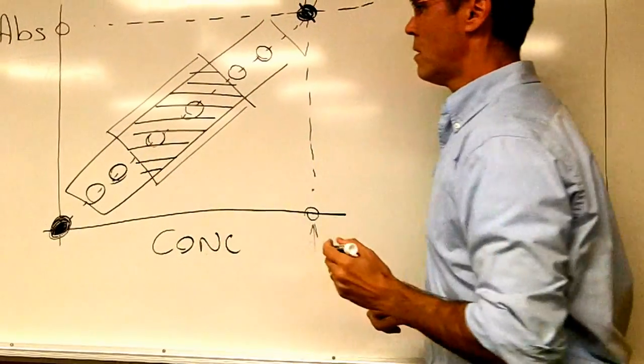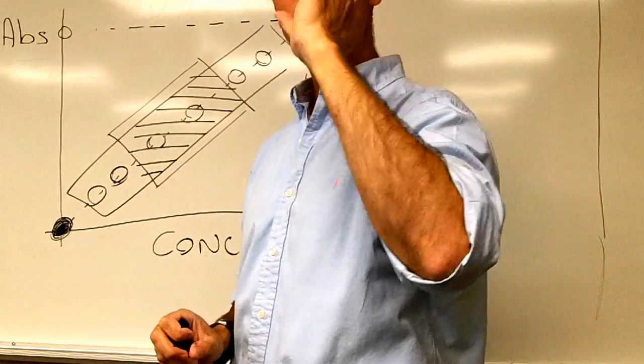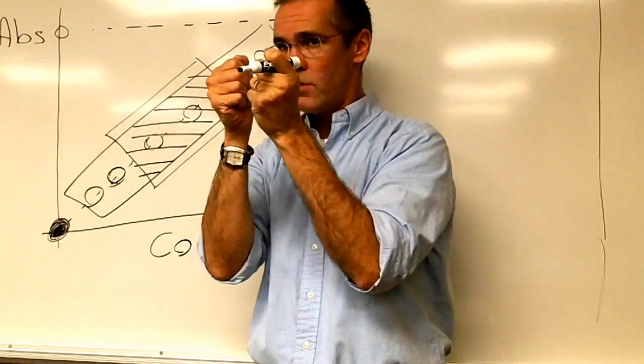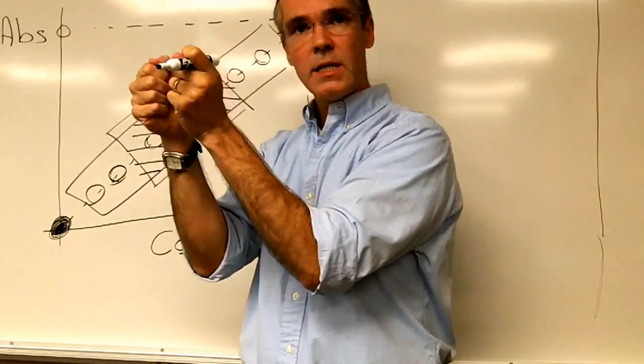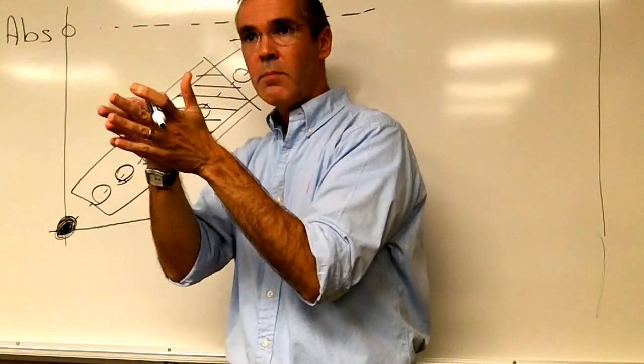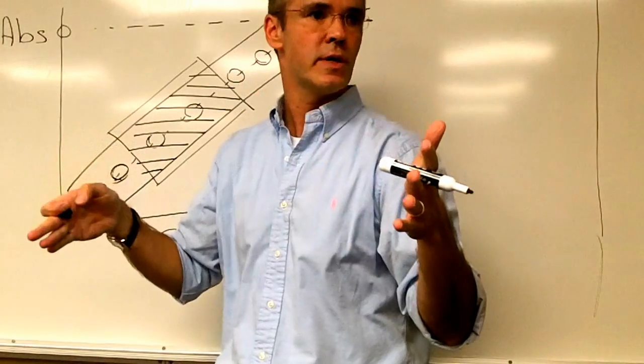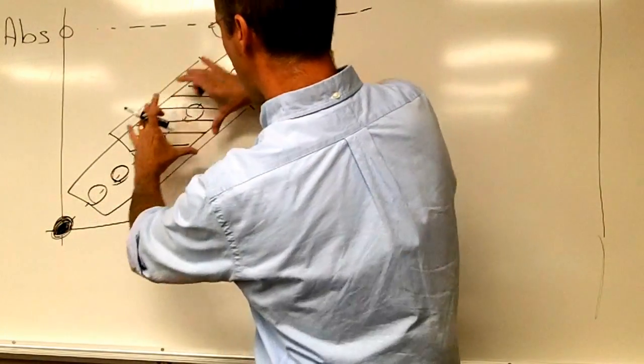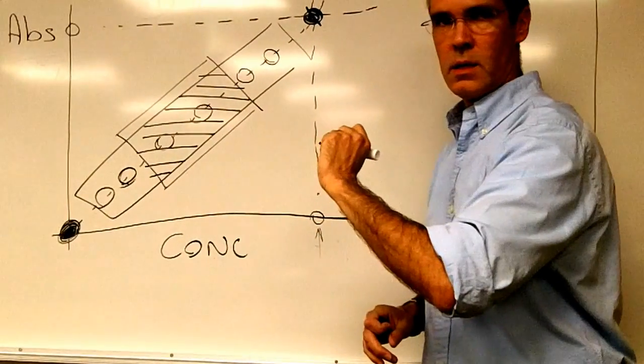So your unknown should be around there. How do you know this? Well, you know this if your unknown is colored and you can see it. You can eyeball it with other standards if you want. You can look at it and create tubes that will be over, like more concentrated than your unknown, and tubes that are less concentrated than your unknown. So you're trying to find that spot where your unknown should be.